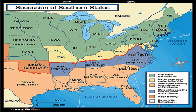Everything wasn't all peaches and cream when the federal government said, 'We don't want you to secede, so we're imposing martial law and you're not going to secede.' One issue with these border states is that it would become a big problem later on when Lincoln wanted to free the slaves. Even though these border states were still in the Union, Missouri, Kentucky, Maryland, and Delaware in particular were still slave states.